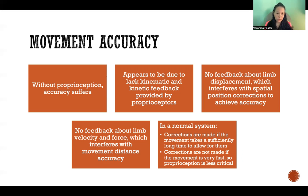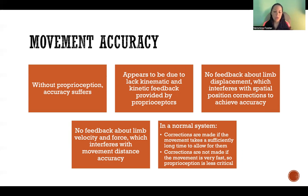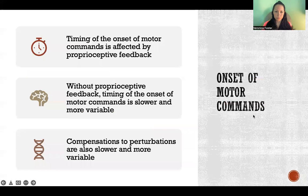In a normal healthy system with proprioception intact, corrections are made if the movement takes sufficiently long time to allow for feedback and correction to take place. If the movement is so fast that there isn't time for proprioceptive data to reach the control center to allow for changes, then proprioception is less critical. Again, this relates to the difference between closed loop and open loop systems, which we'll discuss in a future video.